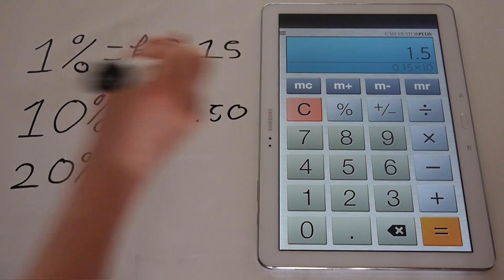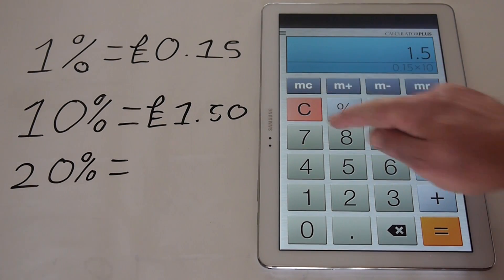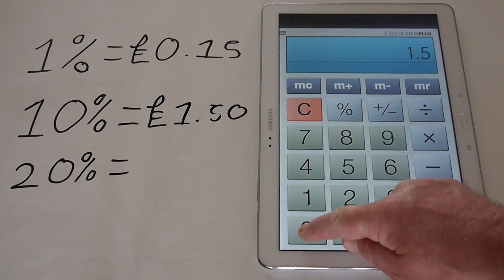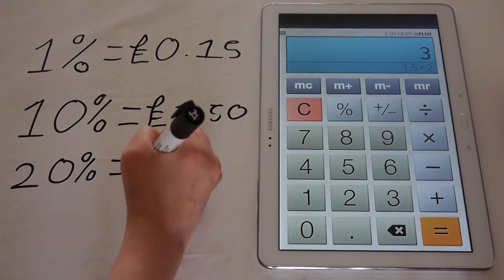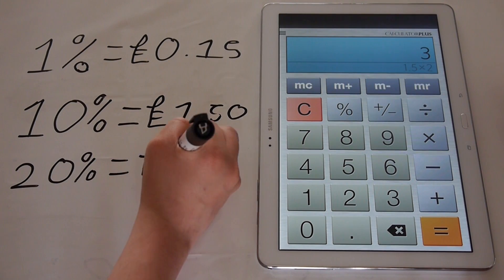OK, so if 10% is £1.50, we can take the £1.50, and then times it by 2, which will give us the 20%. So the 20% of £15 now equals 3 whole pounds, 3.00 pounds.